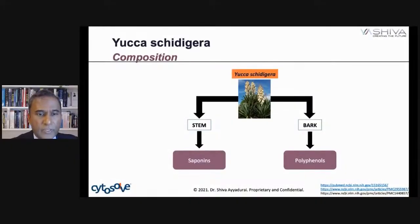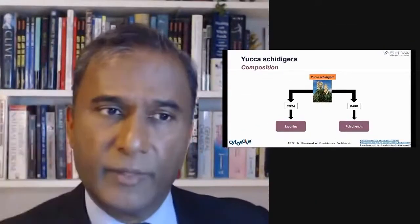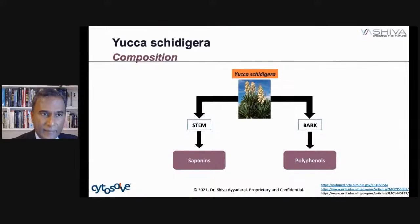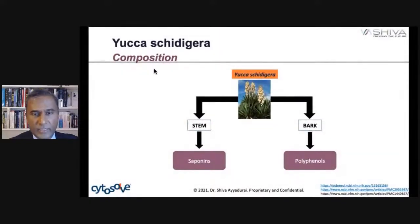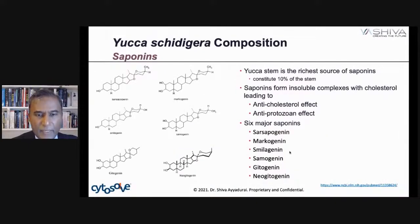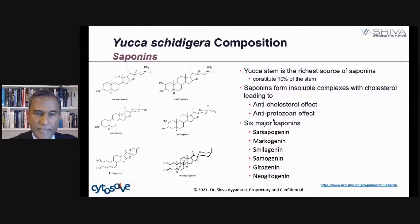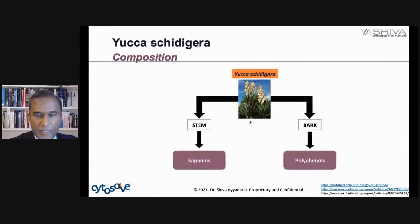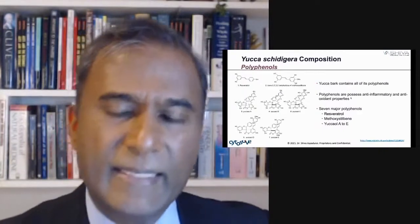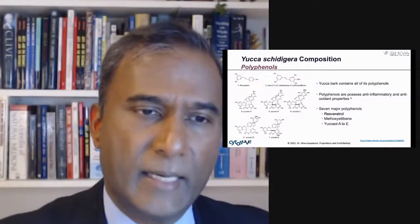So what are the two components of yucca? It's very important what ingredients we're talking about. With yucca, we have the bark and the stem. It's not just the flowers — the stem is where you get the saponins, and the polyphenols come from the bark. There are about six saponins. Saponins form insoluble complexes with cholesterol, leading to an anti-cholesterol effect and an anti-protozoal effect, meaning they can take out parasites. Yucca stem is the richest source of saponins. Yucca bark contains seven major polyphenols, and these possess anti-inflammatory and anti-oxidant properties.